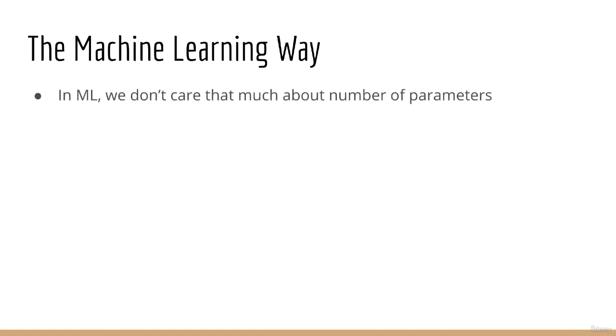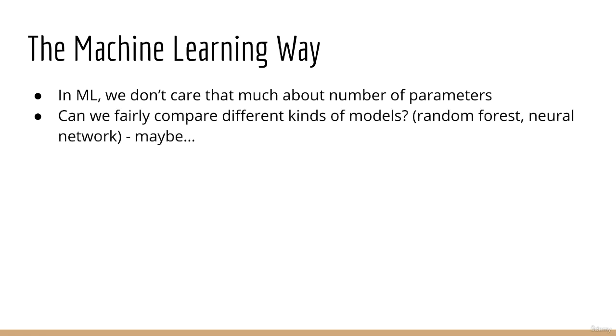In machine learning, we often don't care that much about the number of parameters in a model. One reason why this is, is that you might be comparing different kinds of models. If you're comparing a decision tree to a neural network, for example, they are not really comparable in that way. Another reason is, for modern methods such as deep learning, it often doesn't matter.